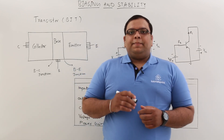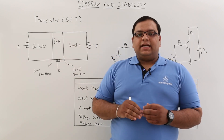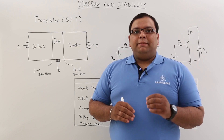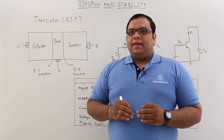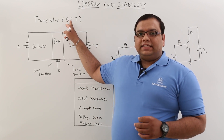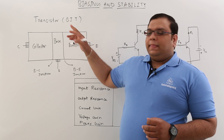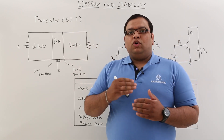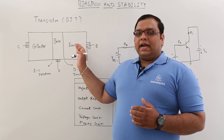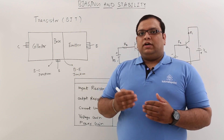In this class let us discuss about biasing and stability. First, let us see about transistors and their introduction. The transistor was found in 1947 at Bell Laboratories by three scientists. The basic transistor was the BJT — bipolar junction transistor. It is called bipolar because it consists of both holes and electrons as charge carriers; current in the transistor is due to both holes and electrons.